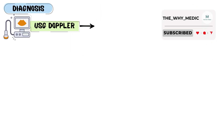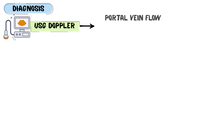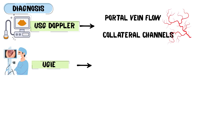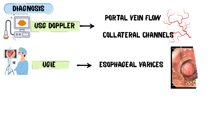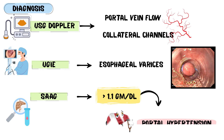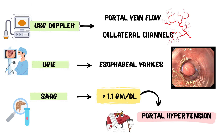Ultrasound with Doppler assesses portal vein flow and detects collateral channels. Upper gastrointestinal endoscopy identifies esophageal varices. A serum ascites albumin gradient greater than 1.1 grams per deciliter suggests portal hypertension.